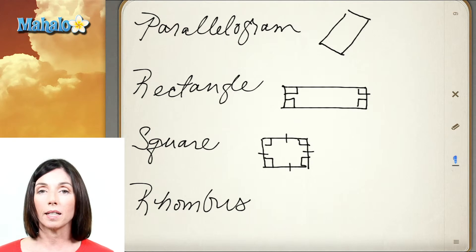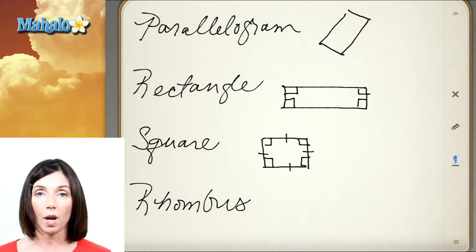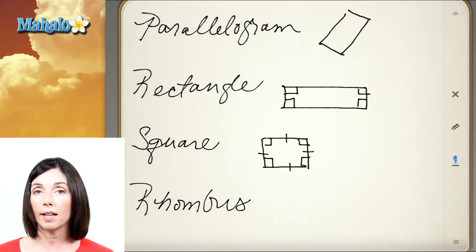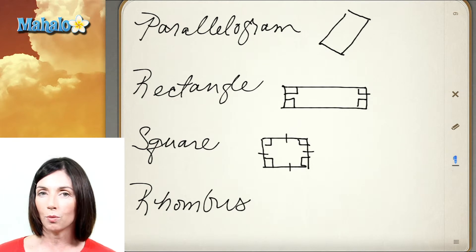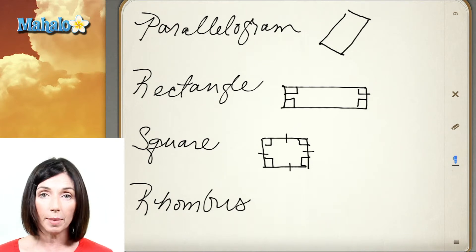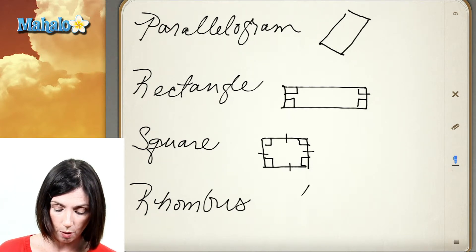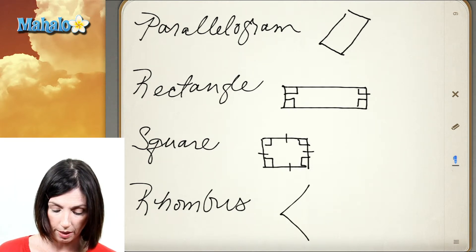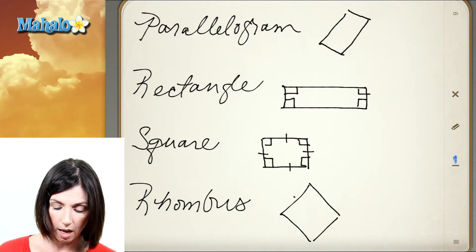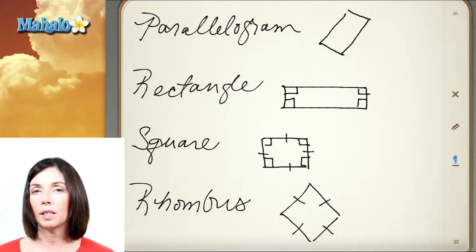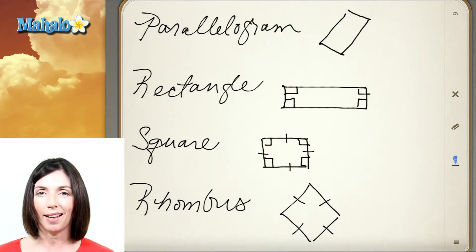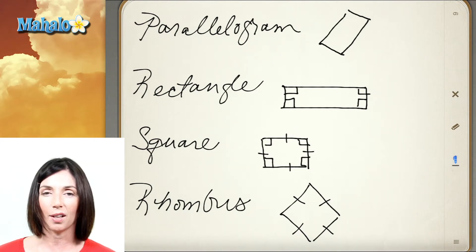A rhombus is another quadrilateral that has four sides all the same length, but they don't necessarily meet at right angles — that makes it different from a square. A rhombus might look something like this: all four sides are the same length but they don't necessarily meet at right angles, so that would make it a rhombus and not a square.